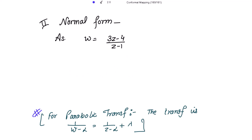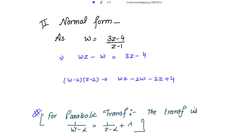Cross-multiplying the original transformation gives wz - w = 3z - 4. To obtain the product (w - 2)(z - 2), we need the terms wz - 2w - 2z + 4. We already have wz, and taking -4 to the other side gives us +4. So writing wz - w - 3z + 4 = 0.